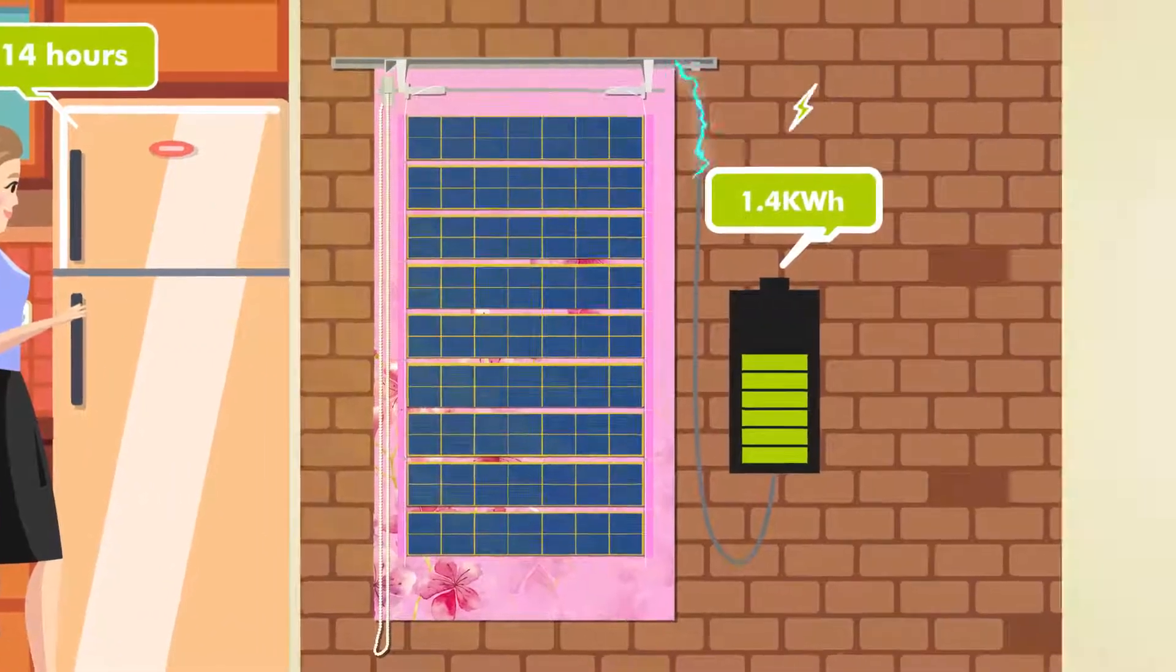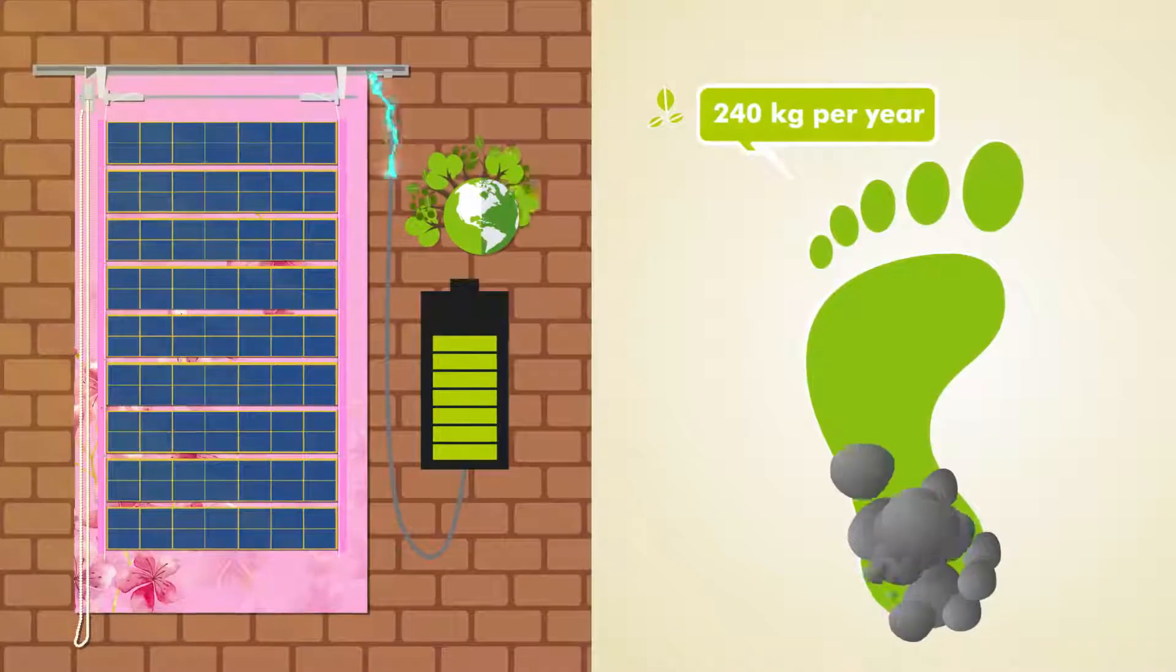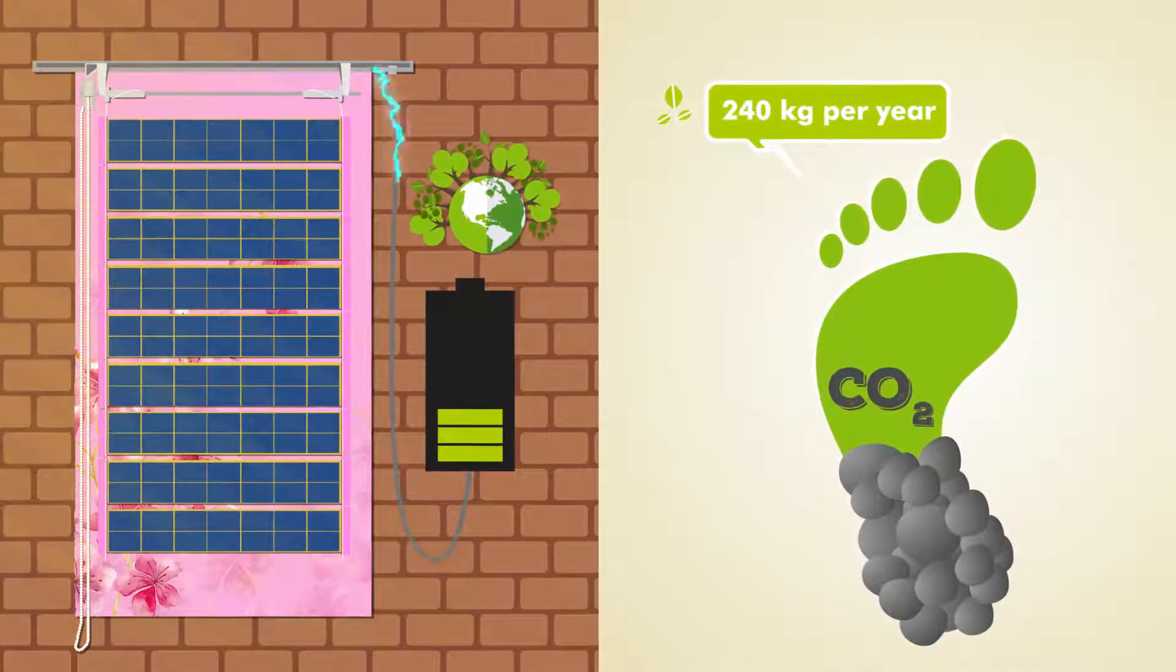With only four square meters, you can save 240 kilogram carbon emission per year.